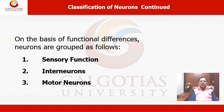Next is the classification of neurons on the basis of their functional differences. Don't be confused — what we learned before was classification based on structure, giving us unipolar, bipolar, and multipolar. Here we are learning based on functional differences, and these are further categorized into three types: sensory neurons, interneurons, and motor neurons.